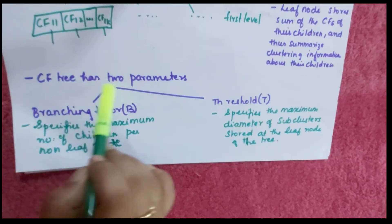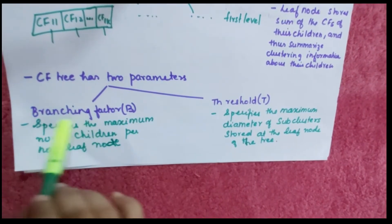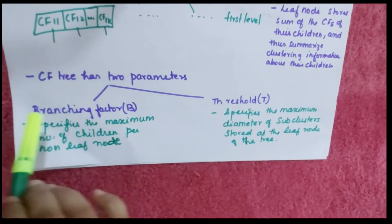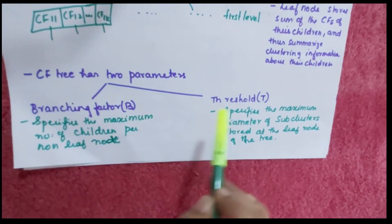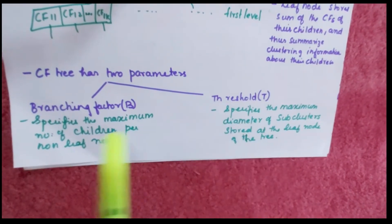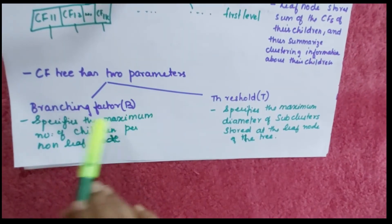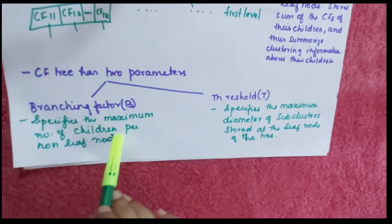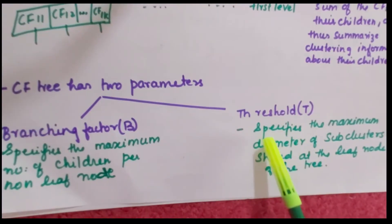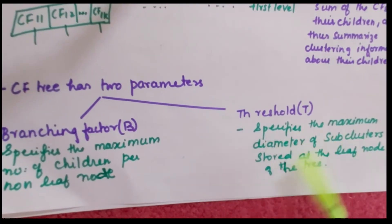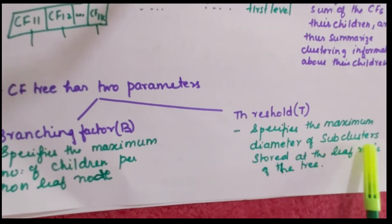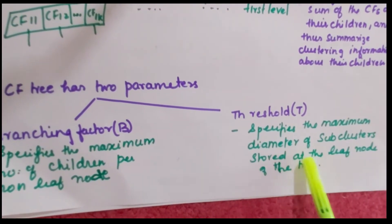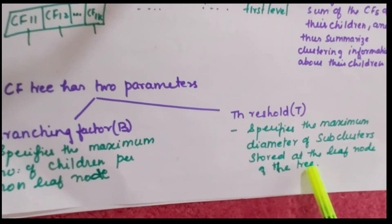There are two parameters of CF tree. One is branching factor B, and another is threshold T. Branching factor B specifies the maximum number of children per non-leaf node, and T specifies the maximum diameter of subclusters stored at the leaf nodes.